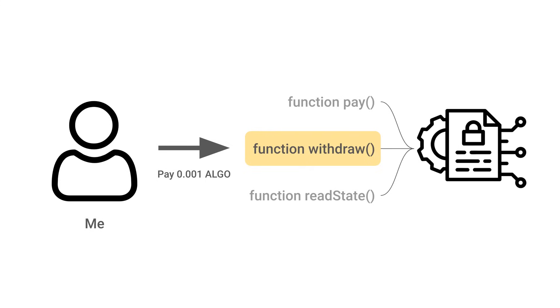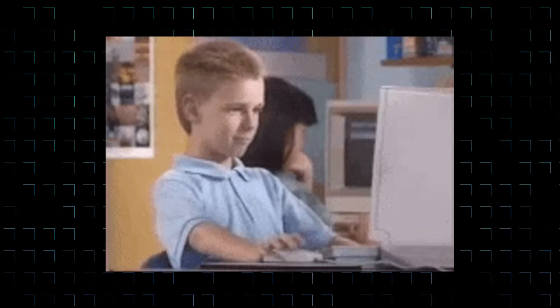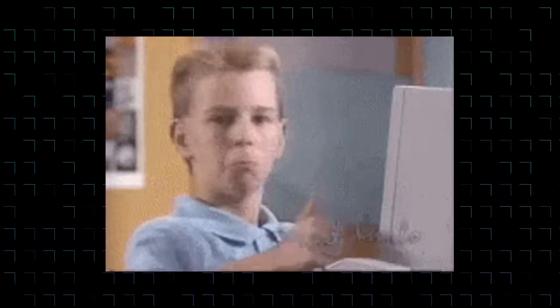Also, if for some reason your transaction doesn't get executed, the transaction fee is returned to you. So for example, if you call a smart contract method and the method only allows the creator of the smart contract to call the method, and you're not the creator, that transaction will fail and return your transaction fee to you. This is great as users won't have to worry about losing transaction fees and feel comfortable sending transactions on Algorand.